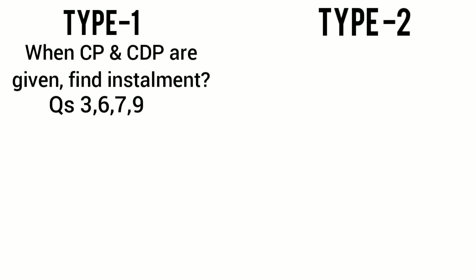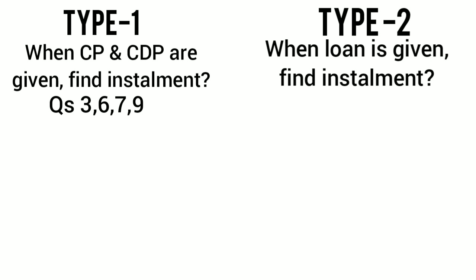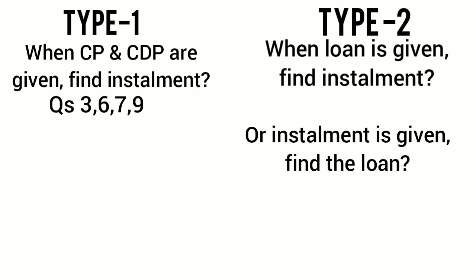The second type is when they give you loan and you have to find installment, or vice versa - they've given you installment and you have to find the loan. Rate of interest will always be given in all questions. These types are found in question number one, eleven, and thirteen where they give you loan and you find installment, and vice versa is question number twelve and fifteen.